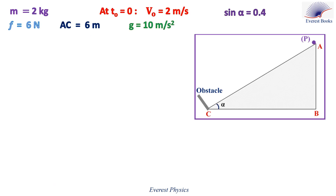A particle P of mass 2 kg is pushed from a point A with an initial velocity V₀ down a rough inclined plane making an angle alpha with the horizontal. The force of friction exerted by the inclined plane on the particle has a constant magnitude of 6 newtons. Neglect air resistance. Given that AC equals 6 meters, V₀ equals 2 meters per second, and sine alpha equals 0.4.